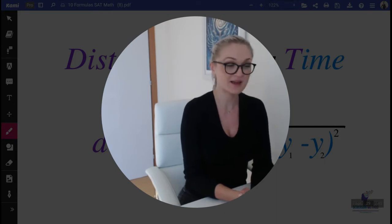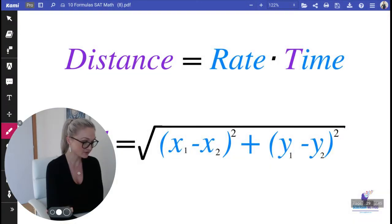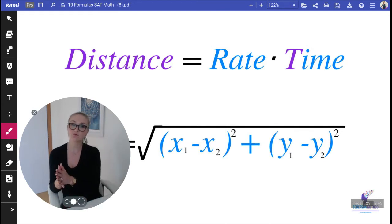I'm going to show you these two formulas. The first one is distance equals rate times time. Many of you may have heard of this as d = rt, where r is rate and t stands for time. When reading your word problem, pay attention to